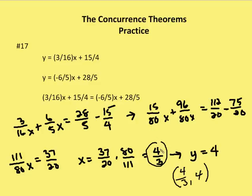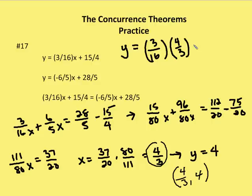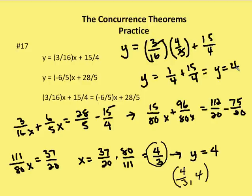Having found x = 4/3, we substitute back into the first equation: y = 3/16 × 4/3 + 15/4 = 1/4 + 15/4 = 16/4 = 4. So (4/3, 4) is our point of concurrency for the medians of the triangle.